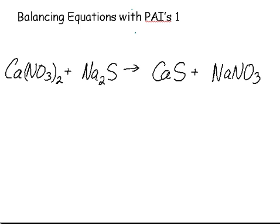You'll notice that we have two NO3s on this side and one NO3 on this side. We put a little circle around the NO3s. Two NO3s, one NO3. NO3 can be treated as if it were a single thing.